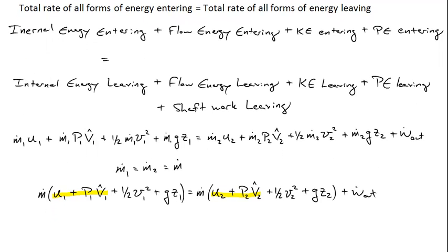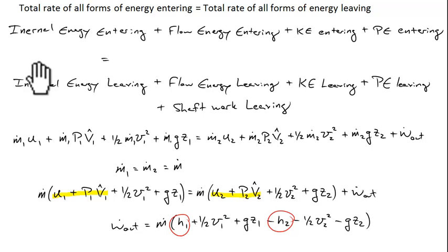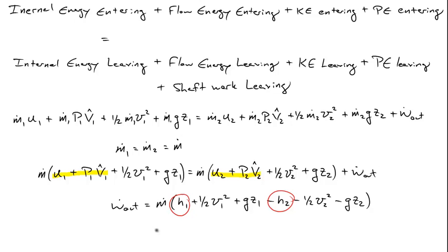I'm going to solve for w_out now and make that substitution for h. So w_out is equal to the mass flow rate times h1 + 1/2 v1^2 + gz1 minus h2 minus 1/2 v2^2 minus gz2. An assumption we can often make is that h1 and h2 are usually fairly large compared to the kinetic and potential energy differences. They're so large that it may only make a percent or two difference. We might get by by just saying w_out equals the mass flow rate through the turbine times h1 minus h2.